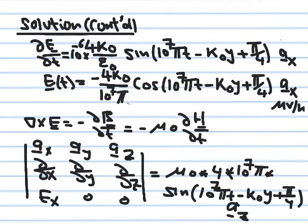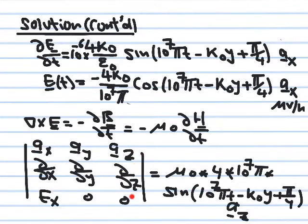On the left-hand side, we have the curl of E. E has only an x-component, so we expand the curl determinant. Since E_x is a function of y, the only non-zero component comes from canceling the appropriate row and column, giving minus partial E_x partial y, in the z-direction.